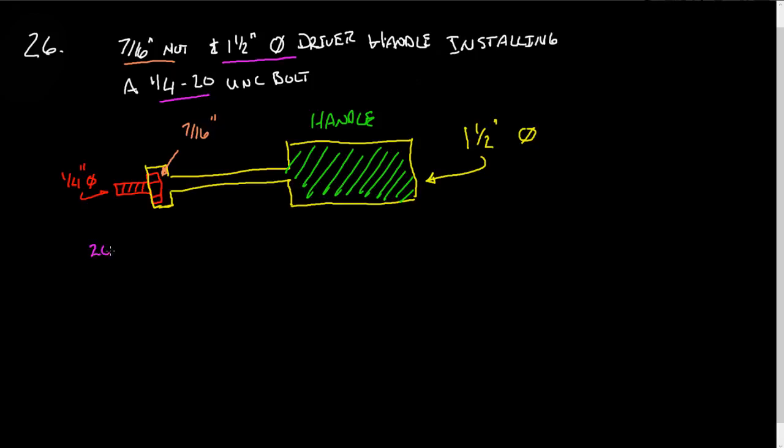So we have to know that the 20, quarter 20, means that this is the diameter of the bolt on the major diameter, and then these are the number of threads per inch. So TPI.